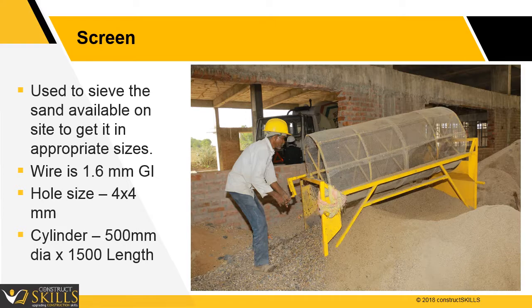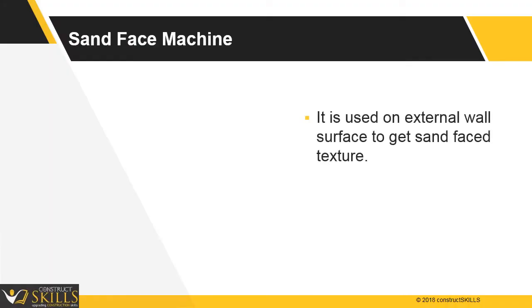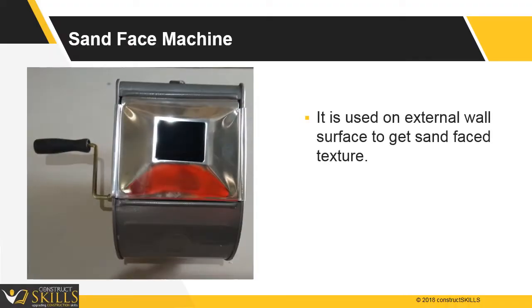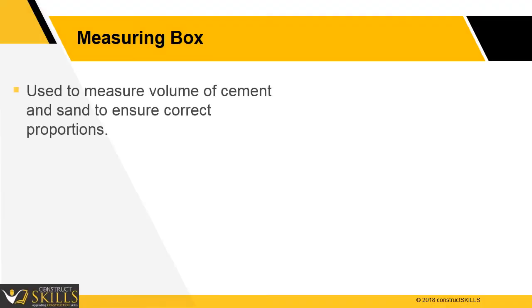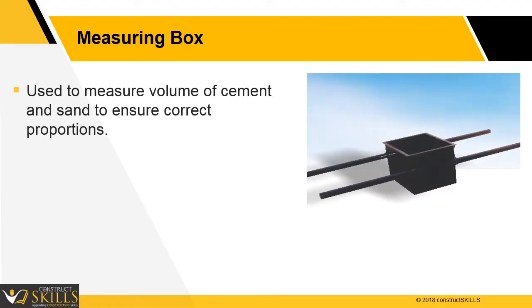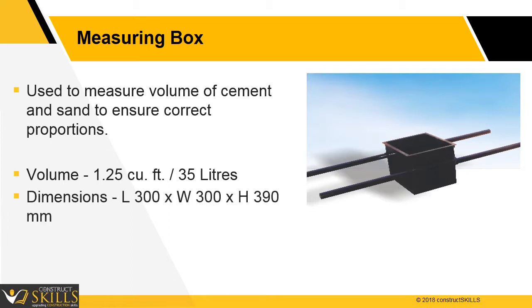Sand face machine: it is used on external wall surfaces to get a sand face texture. Measuring boxes are used to measure the volume of cement and sand to ensure correct proportions. The box volume is 1.25 cubic feet or 35 liters, which equals the volume of a cement bag. The standard dimensions are 300 by 300 by 390 millimeters.